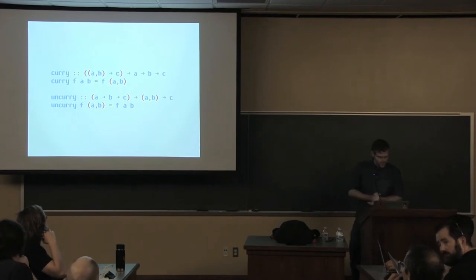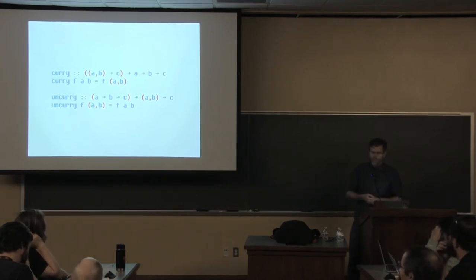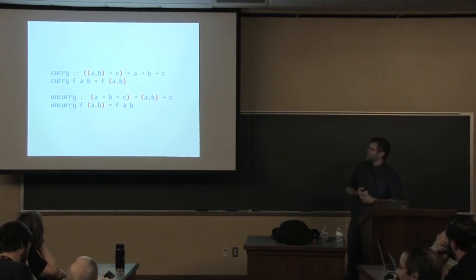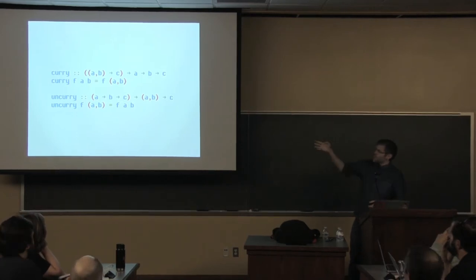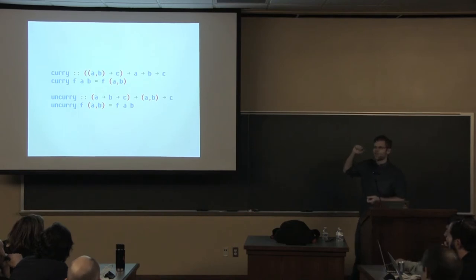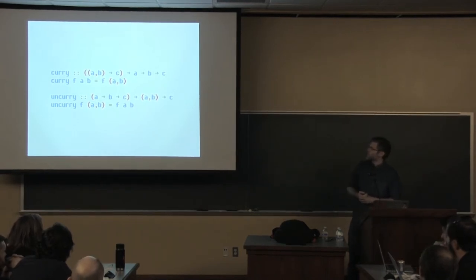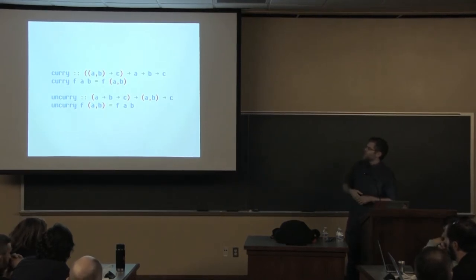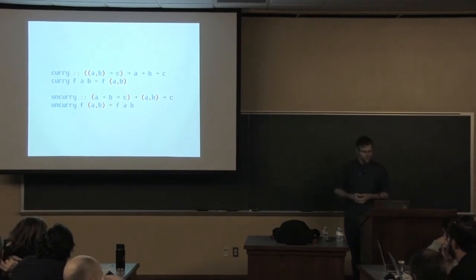The first thing we're going to look at is curry and uncurry. These are functions that are super simple in Haskell. Curry says that if we have a function that takes a pair of A and B and returns a C, we can turn that into a function that takes an A and returns a function that takes a B and returns a C. So we can take a function of a pair and turn that into a function we can partially apply. Uncurry goes the other way.